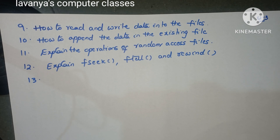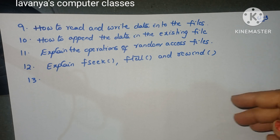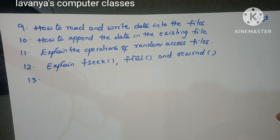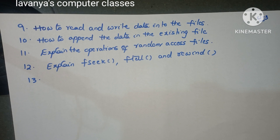Explain the operations of random access files. The same question is also asked as: explain the fseek function, ftell function, and rewind function — those are also examples for random access files. These are the very important questions in Unit 3.